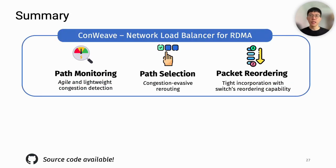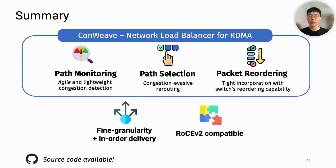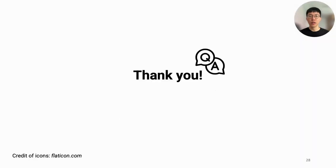To summarize, in this paper we present Convive, a network load balancing framework for RDMA. Through techniques in path monitoring, path selection, and packet reordering, Convive provides fine-grained load balancing while ensuring in-order packet delivery. From the testbed evaluation, we see that Convive fits well into commodity RDMA NICs and is comparable with RoCEv2. Thank you for listening.